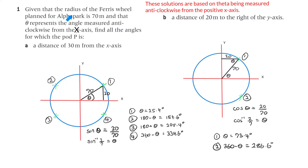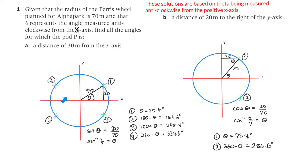Question 1. Given that the radius of the ferris wheel planned for Alpha Park is 70 metres, and that theta represents the angle measured anti-clockwise from the x-axis, find all the angles for which the pod P is: A, a distance of 30 metres from the x-axis. These solutions are based on theta being measured anti-clockwise from the positive x-axis, going around that way.